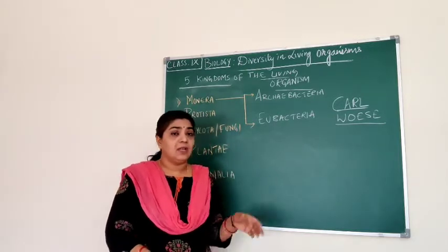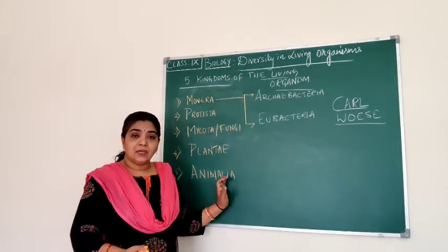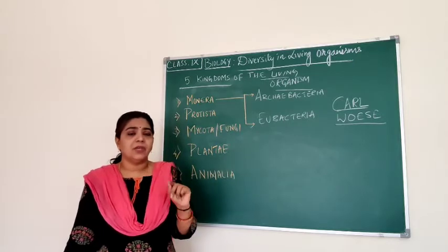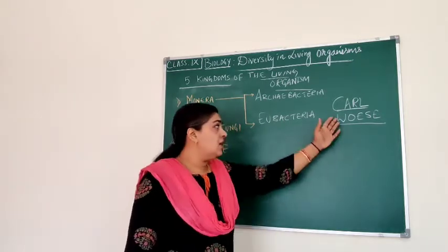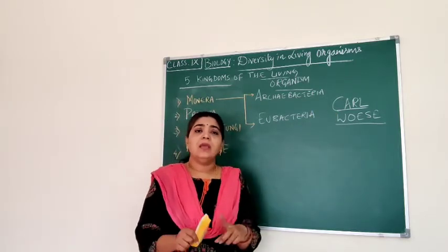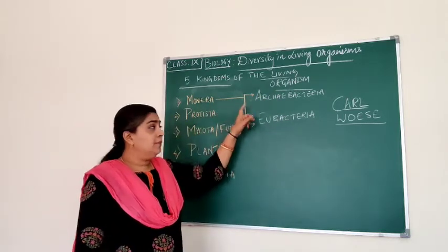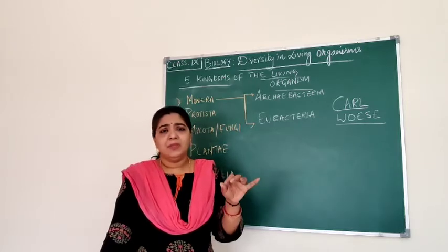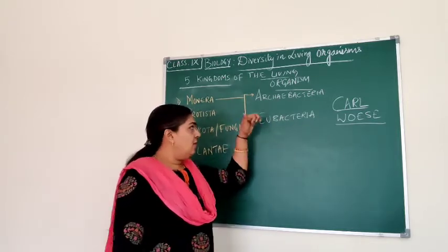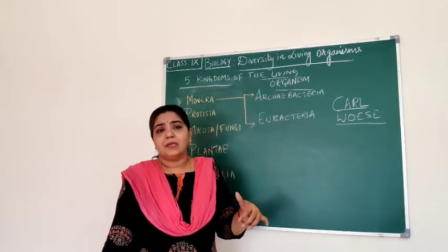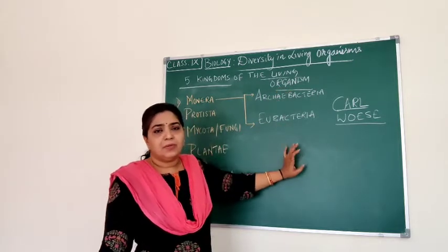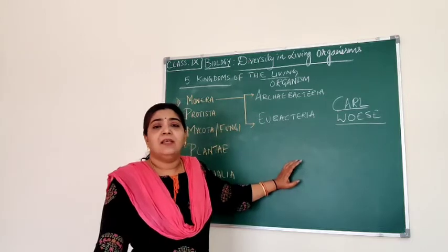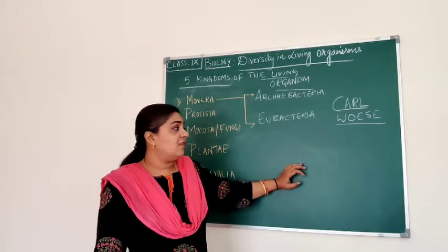Robert Whittaker gave this five kingdom classification. Even now we follow these five kingdoms, but with a slight variation. One more biologist, an American biologist called Carl Woese, gave two more divisions under kingdom Monera: Archaebacteria and Eubacteria. They are both prokaryotic, with slight differences between them. All cyanobacteria come under Eubacteria. So within kingdom Monera, you will find these two more divisions — Archaebacteria and Eubacteria — given by Carl Woese.